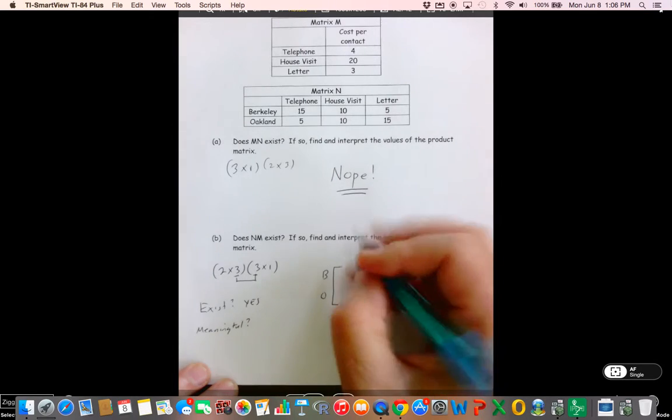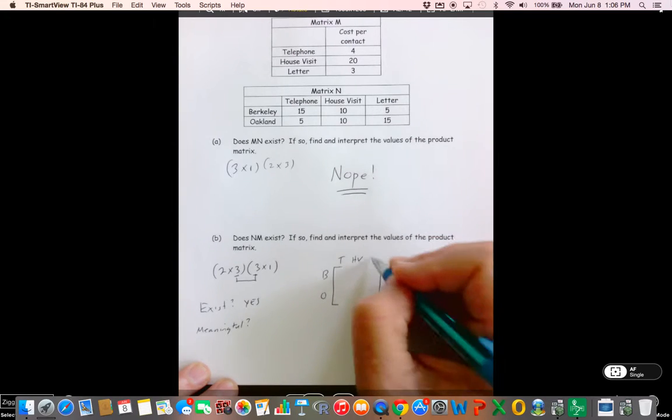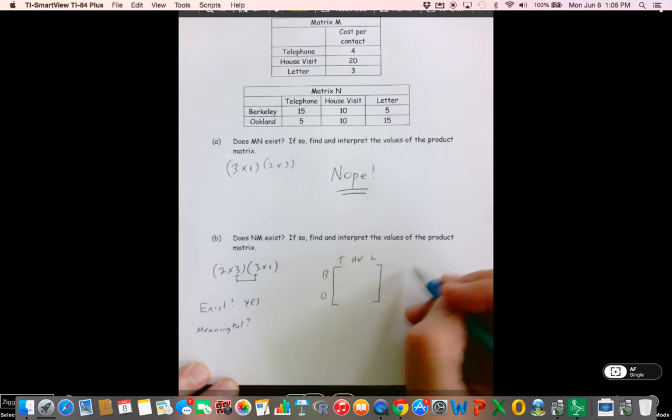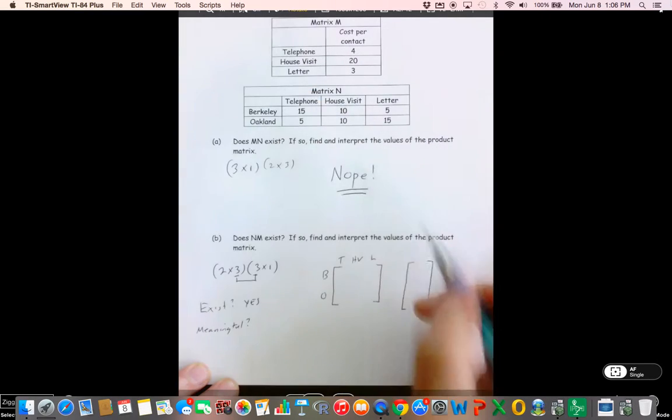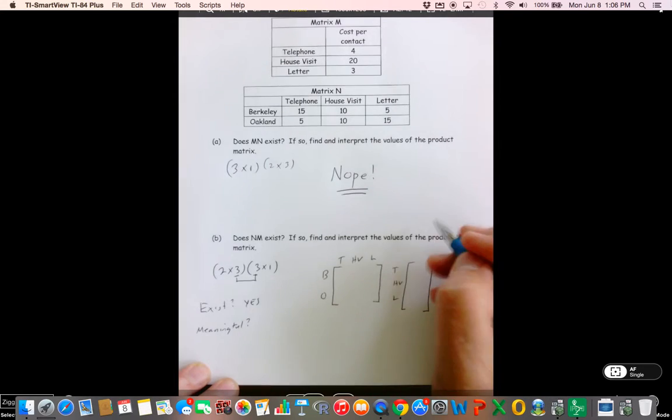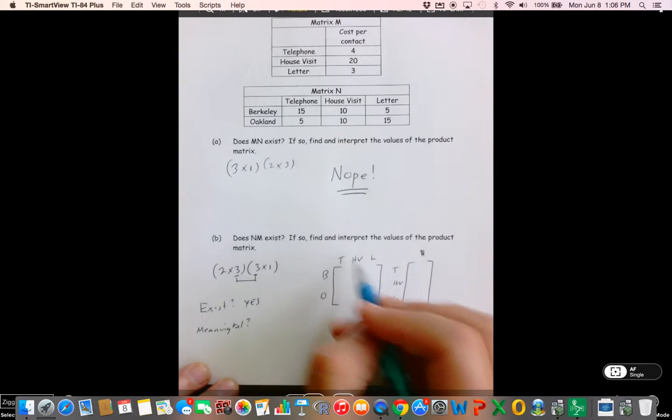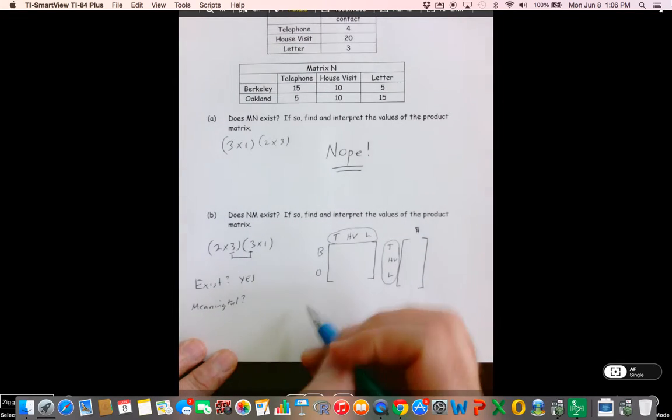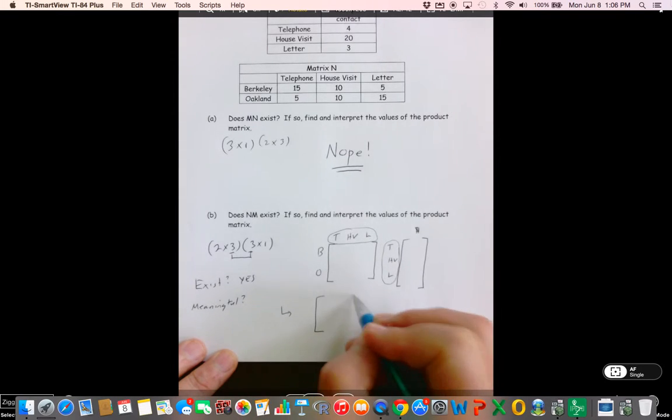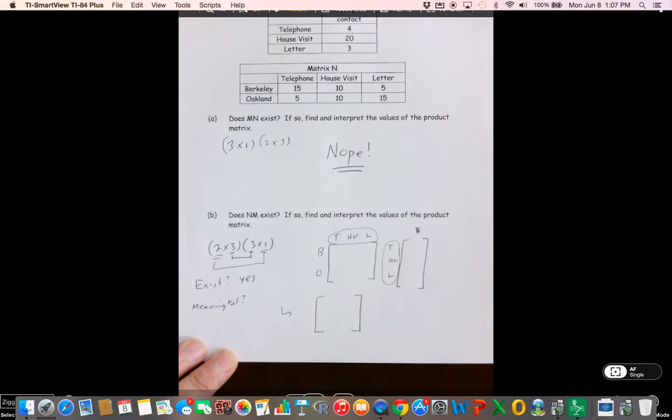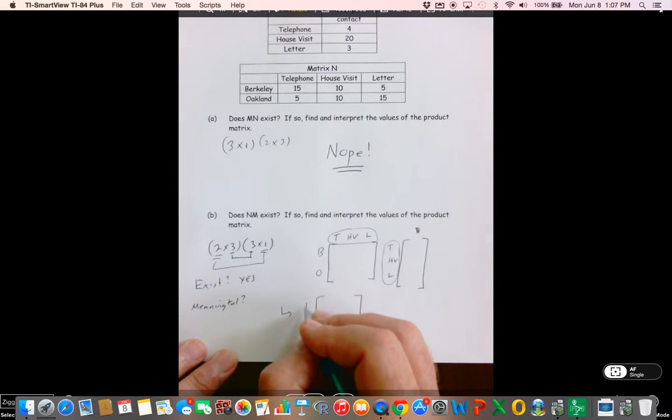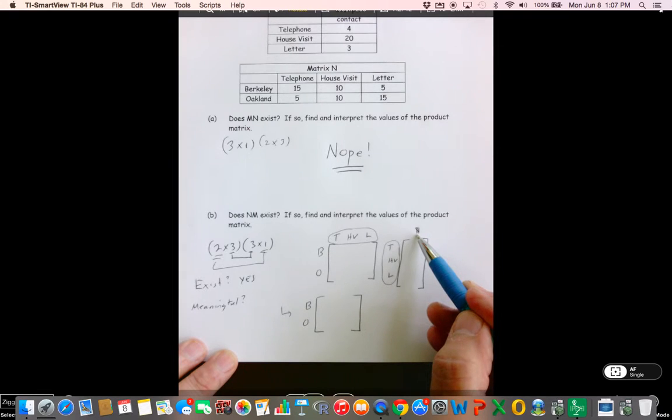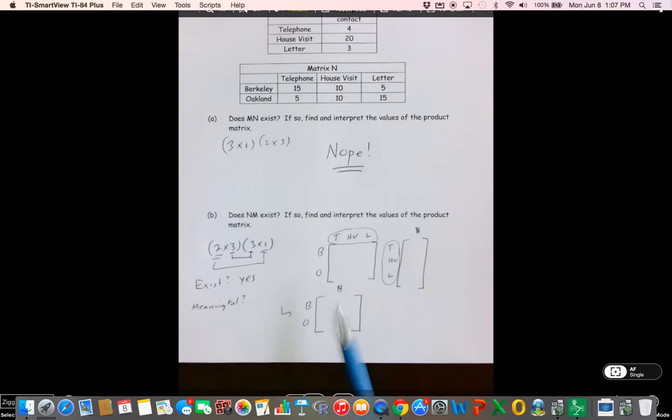But is it meaningful? Well let's examine the structure, okay? We have a 2 by 3: Berkeley, Oakland, telephone, house visit, letter. This over here is a 3 by 1: telephone, house visit, letter, cost. Not only is there three of these and three of these, they mean the same thing. Our resulting matrix is going to be a 2 by 1. It's going to get its rows from the first matrix, Berkeley, Oakland. And it's going to get its value for the column from the second matrix. So guys, when we multiply this out, and I'm not going to do it just to save time, it's going to give us the total cost for Berkeley and for Oakland.